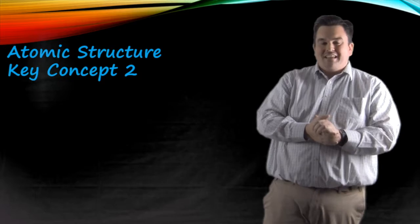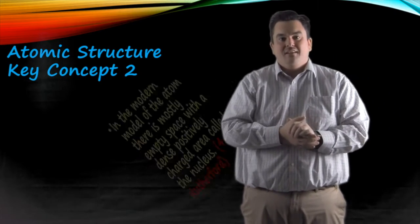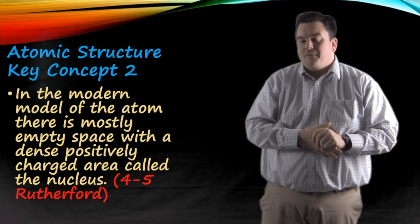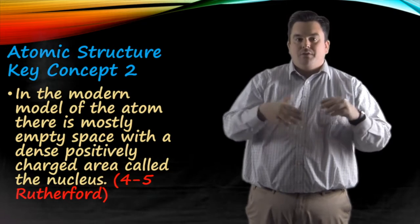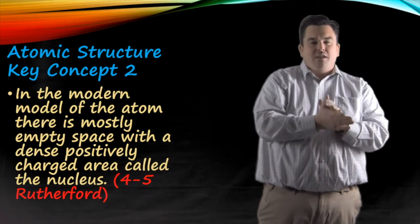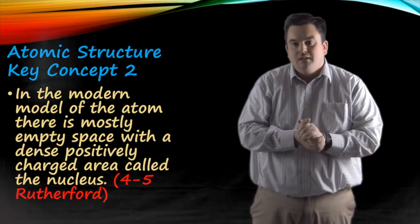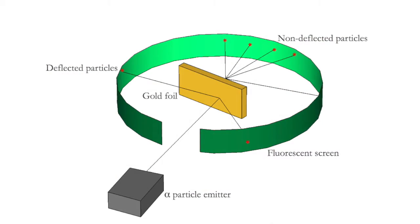Atomic structure, key concept number two. In the modern model of the atom, there is mostly empty space, with a dense, positively charged area called the nucleus. Now, this is the part where New York State really wants you to know Ernest Rutherford. His experiment being the gold foil experiment. He bombarded gold foil with alpha particles.